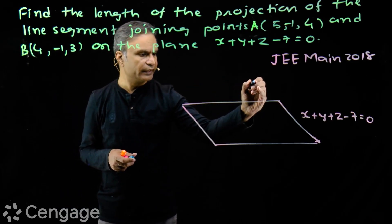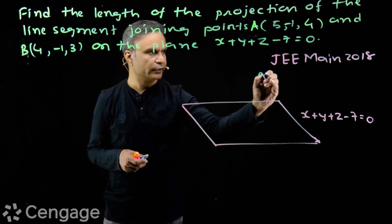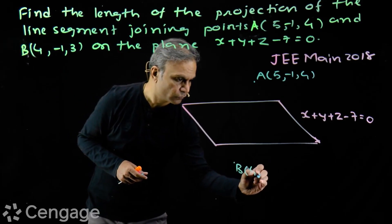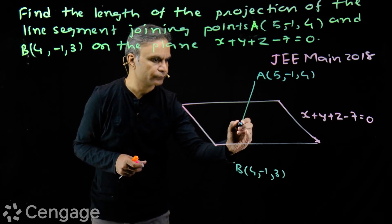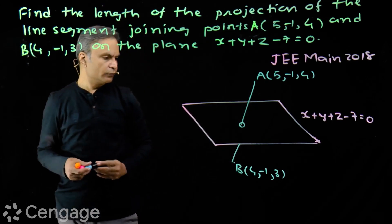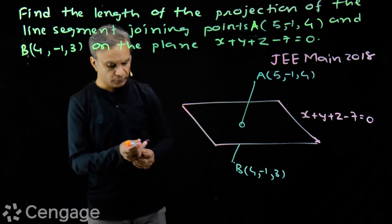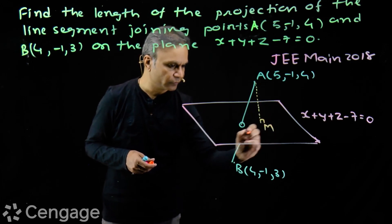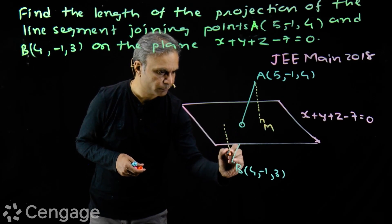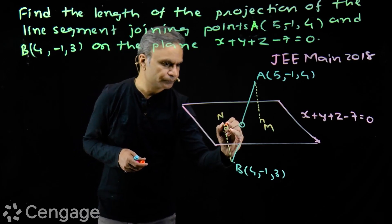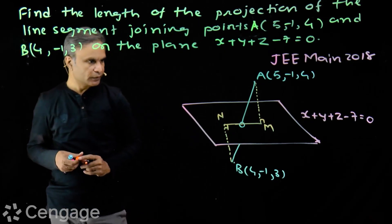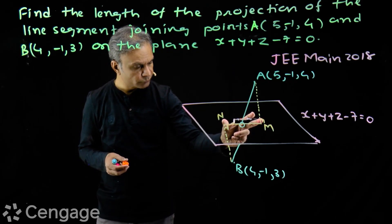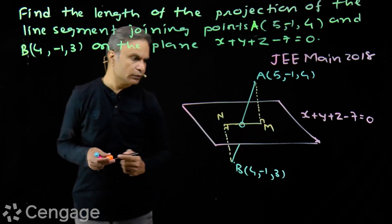We have points A and B on opposite sides of the plane. Point A has coordinates (5, -1, 4) and point B is on the opposite side with coordinates (4, -1, 3). We join these two points to get this line segment. We have to find the projection of this line segment on this plane. For the projection, we draw perpendiculars from points A and B on the plane. The foot of the perpendicular from A is M and from B is N. We have to find the length MN.